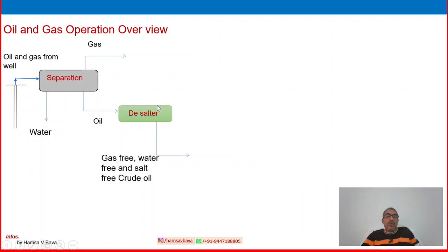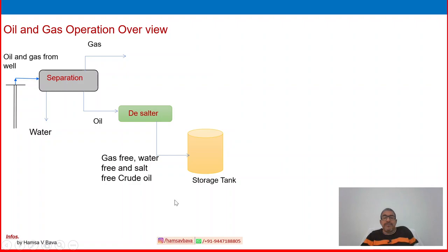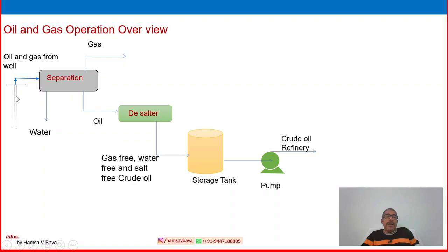Gas is removed, water is removed, and oil reaches the desalter where we remove any salt content. So crude oil will be gas-free, water-free, and salt-free, then goes to a storage tank — a buffer storage facility to keep crude oil for some time before shipping or sending to a refinery. This is the crude oil route from the wellhead to the refinery.